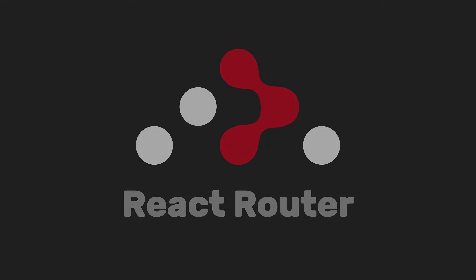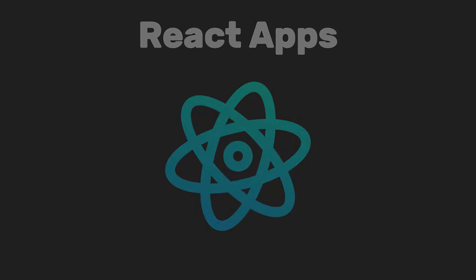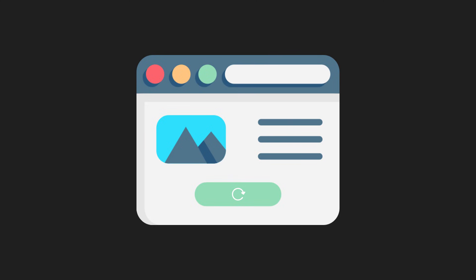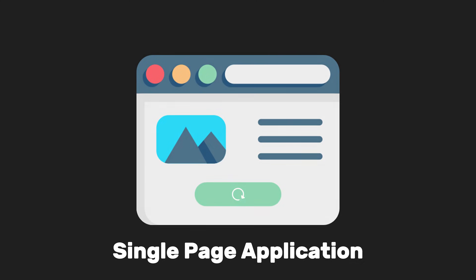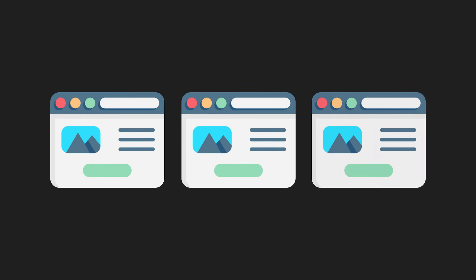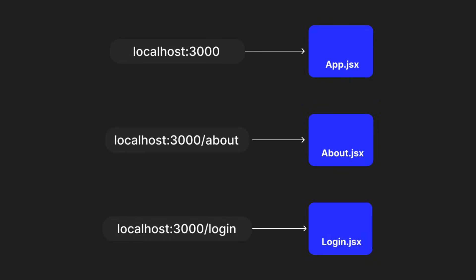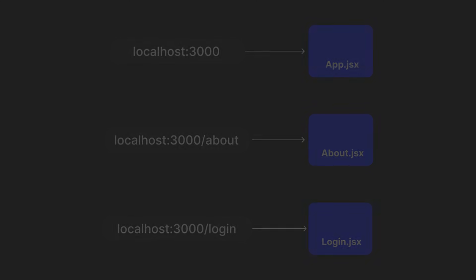React Router is a library for managing navigation in React apps. It allows you to create a single-page application with multiple views or pages without reloading the browser. It works by matching the URL in the browser to specific components in your app.